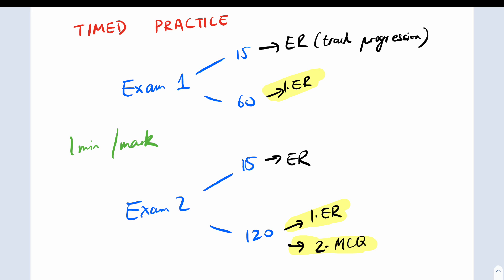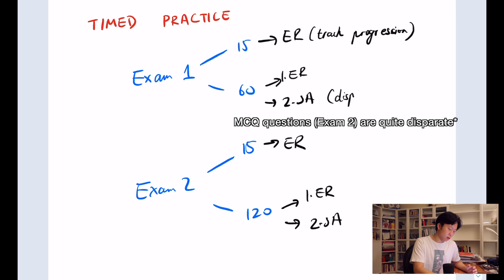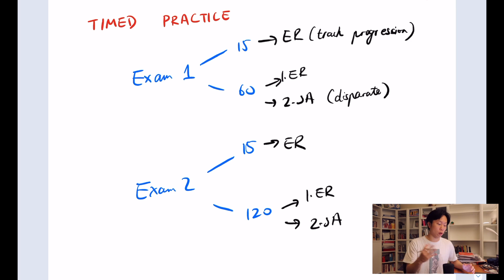For exam one I set the exam from front to back because all the questions are of the same type - they're all extended response. For exam two I sat the extended response section first and the multiple choice question second. The reason I started with extended response in reading time is because oftentimes there is a progression of questions. A is really obvious, B gets a little harder, C gets a little harder, D is really hard but you've got to put together the information from A, B, and C. I feel like that deep thinking I tried to do in reading time, whereas for the short answer each question is quite different from one another.